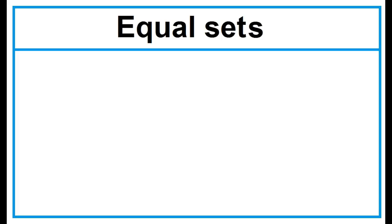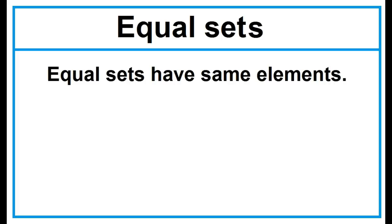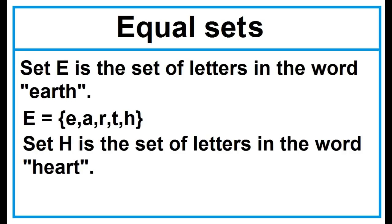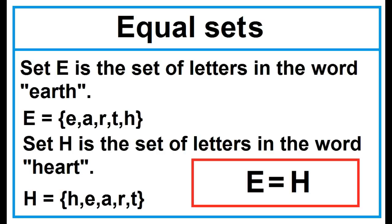Equal Sets — two sets are equal if they have the same elements. Example: Set E is the set of letters in the word 'Earth.' The elements of Set E are E, A, R, T, H. Set H is the set of letters in the word 'Heart.' The elements of Set H are H, E, A, R, T. Set E and Set H have the same elements — they are equal sets. Set E equals Set H.